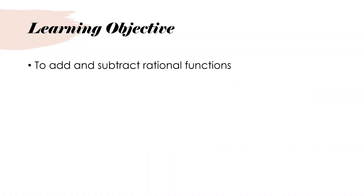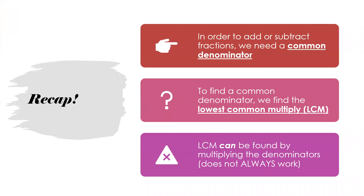We're going to add and subtract rational functions. In order to add or subtract fractions — a little recap — you need something called the common denominator. In order to find the common denominator, you need to find the lowest common multiple. You want to find the lowest common multiple. This is not always the most efficient way to do this.